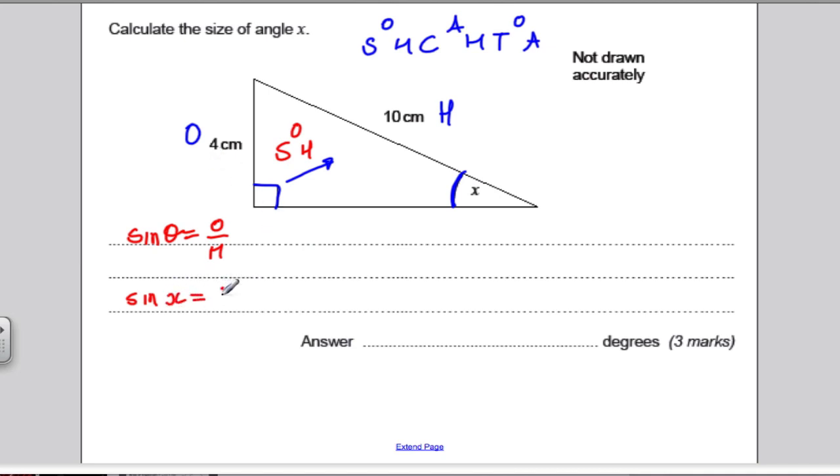So, sine of, our angle here is X, is equal to opposite, which is 4, divided by 10. And therefore, X, to get X out of, it's inside the sine function, you apply the inverse sine to both sides. And in particular, then X is the inverse sine of 4 over 10. So, when you're calculating the type, shift, sine, 4, divided by 10, close brackets, equals. And you should get, with some luck, 23.6 degrees, let's say, to one decimal place. 23.6. Tell the exam that you've done 1dp. And there's nice, easy three marks.